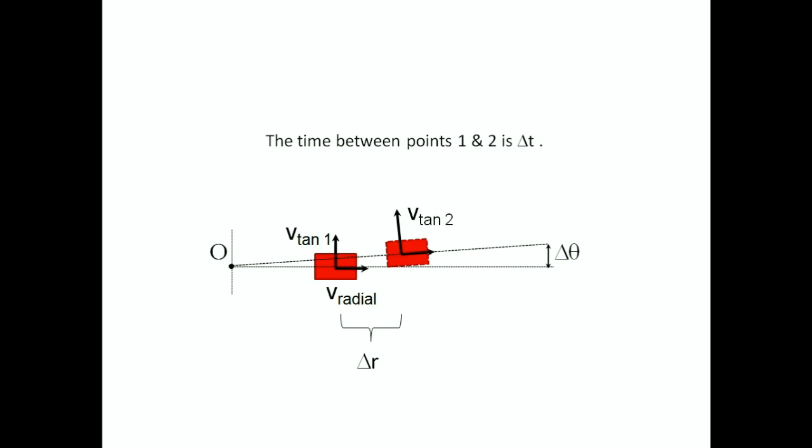The two components of the slider's velocity will be changing in three ways. Firstly, the direction of the tangential velocity is changing. This gives rise to centripetal acceleration. Since the focus of our video is Coriolis acceleration, we need only be aware of this.